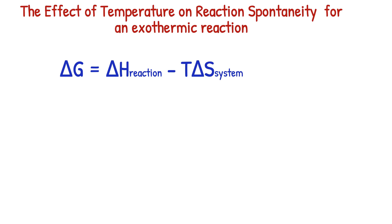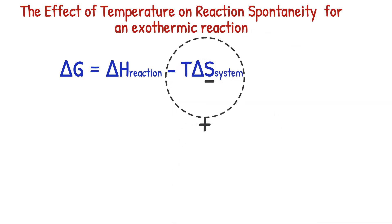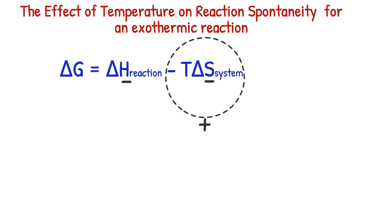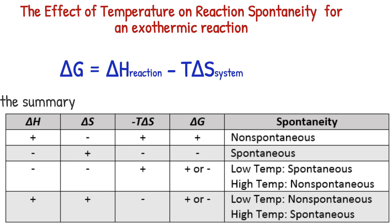On the other hand, if the value of entropy change of the system is negative, this term is positive. At high temperature, this term will be positive enough to overcome the negative value of the enthalpy change of reaction, making the free energy change positive. So the reaction is non-spontaneous at high temperature. You can apply similar reasoning for an endothermic reaction. The table below shows a summary of reaction spontaneity under different conditions.